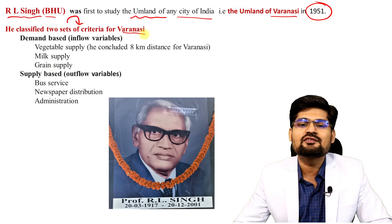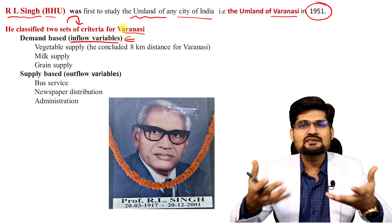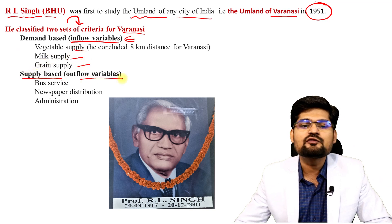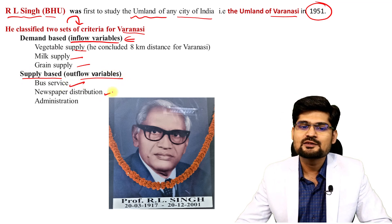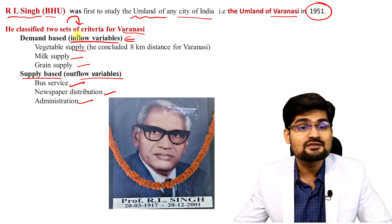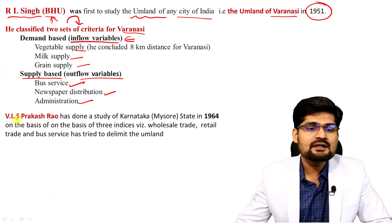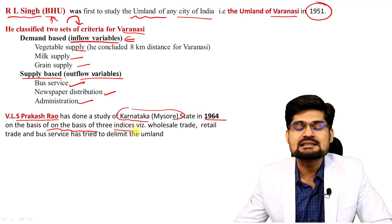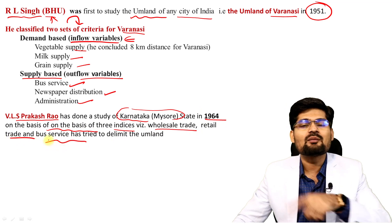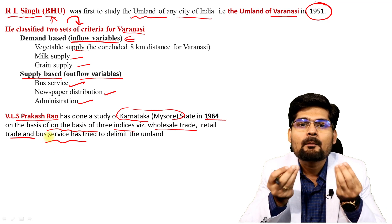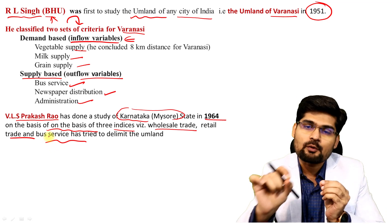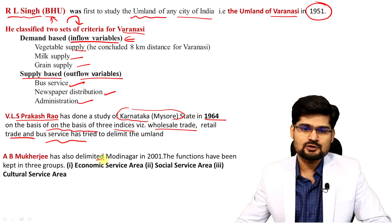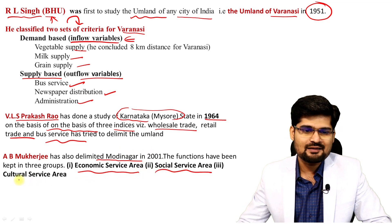R.L. Singh classified two sets of criteria for Varanasi: inflow variables — services coming inward from outside to the city such as vegetable supply, milk supply, and grain supply — and outflow variables, the services given by the city such as bus service, newspaper, administration, and educational services of BHU. VLS Prakash Rao conducted a study of Karnataka and Mysore in 1964, using three indices — wholesale trade, retail trade, and bus service — to delimit the umland. AB Mukherjee also studied Modi Nagar (2001), distinguishing economic, social, and cultural service areas.